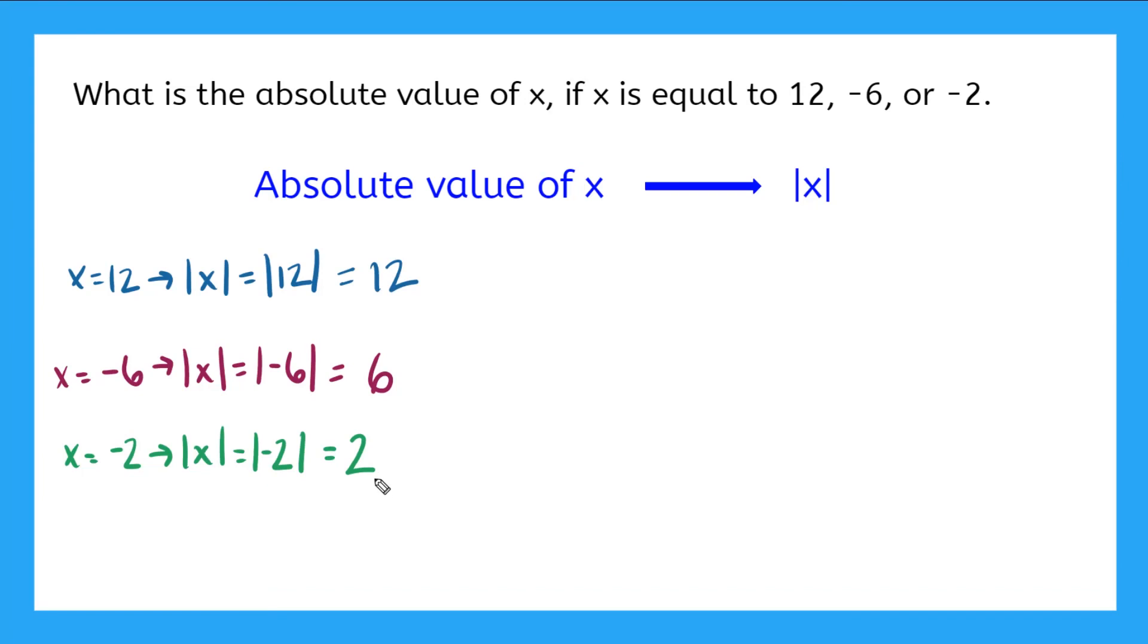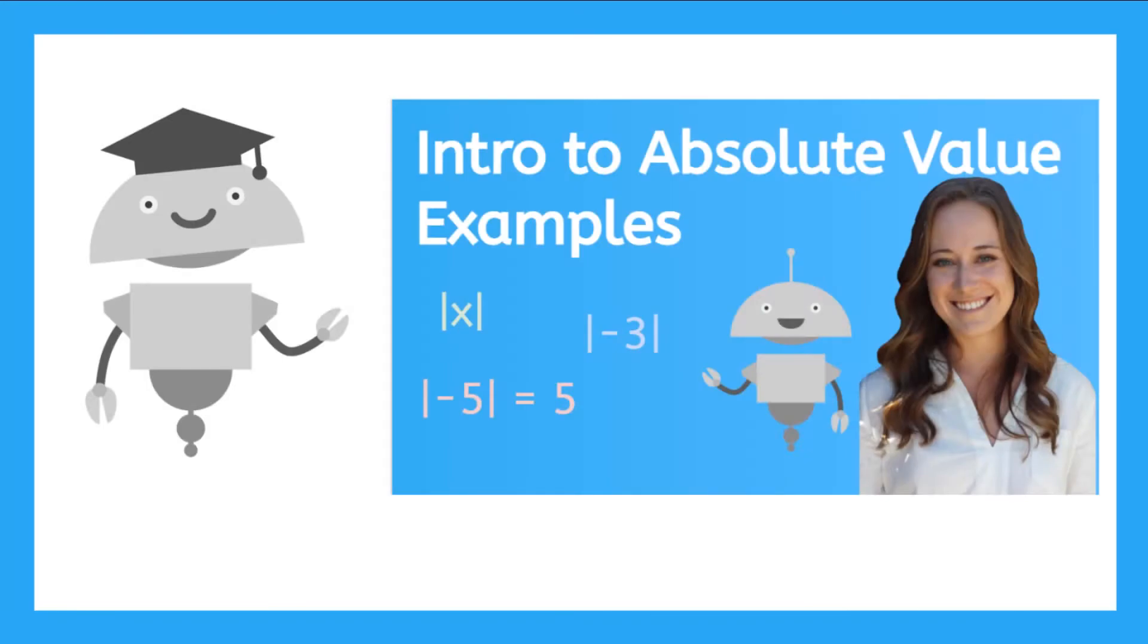Do you notice anything about all of these answers? Yeah, the one thing we notice right away is they're all positive numbers. Now you know the absolute value of a number just means the distance that number is from zero. Join me in the next video to do some practice problems and a real life application. See you there!